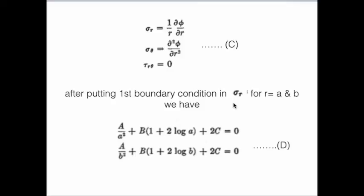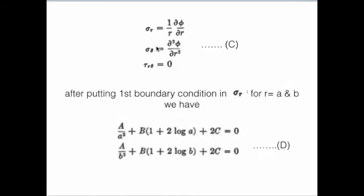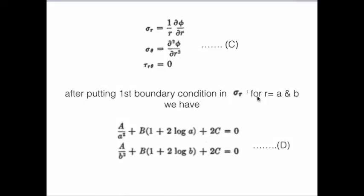So after putting first boundary condition in σ_r for r = a and b, we will have a function. Actually, first to find σ_r, we have to put stress function which is this stress function in σ_r. We will get something in terms of a, b, c and log. Then we will put r = a and b in it. So we will have these two conditions. You will easily get it, just do one or two steps. So these two equations we will have, which I'm calling them D.